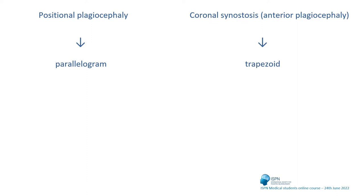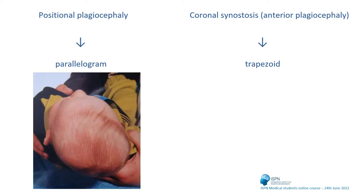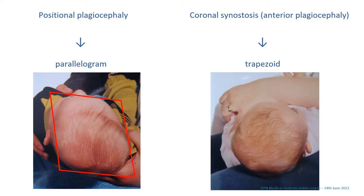There are typical signs to differentiate positional and true plagiocephaly clinically. If you look at the top of the head of a child with positional plagiocephaly, you will see a kind of parallelogram: pressure at the left side of the back causes protrusion of the forehead on the same side, leading to a parallelogram shape. In cases of true plagiocephaly caused by a coronal synostosis, we have a retruded frontal forehead and a retruded occiput on the affected side, leading to a shorter length on that half of the skull and a trapezoid shape when viewed from above.